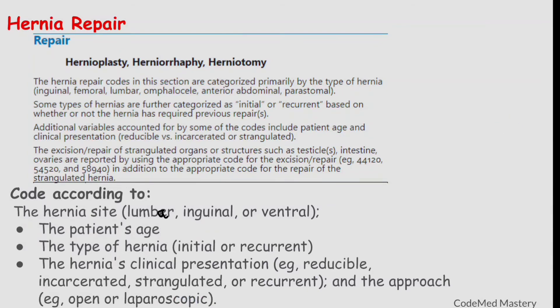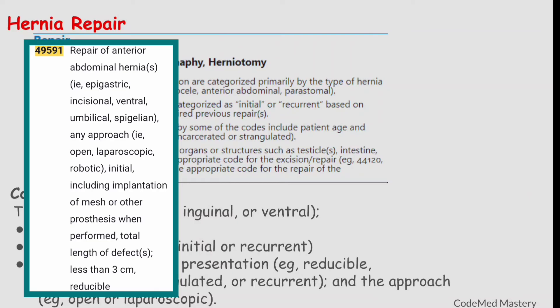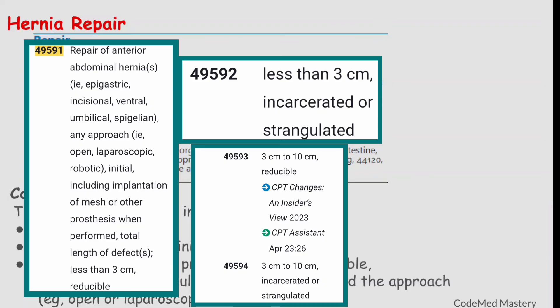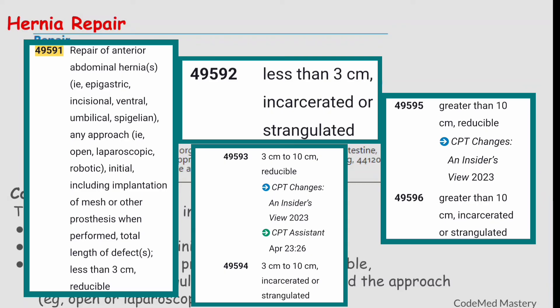For repair of anterior abdominal hernia, initial: the parent code 49591 is for less than 3 cm reducible; 49592 is for less than 3 cm incarcerated or strangulated. Code 49593 is for 3 cm to 10 cm reducible; 49594 is for 3 cm to 10 cm incarcerated or strangulated. Code 49595 is for greater than 10 cm reducible; 49596 is for greater than 10 cm incarcerated or strangulated.